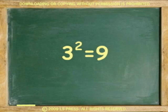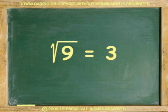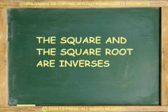The square raises numbers to the second power. 3 square equals 9. And the square root does the opposite. The square root of 9 is 3. In other words, the square and the square root are inverses of each other.